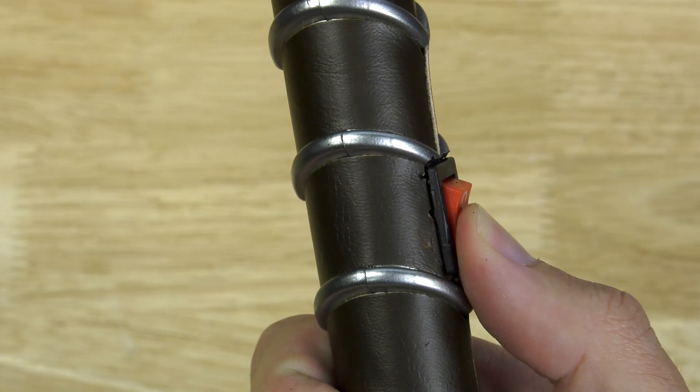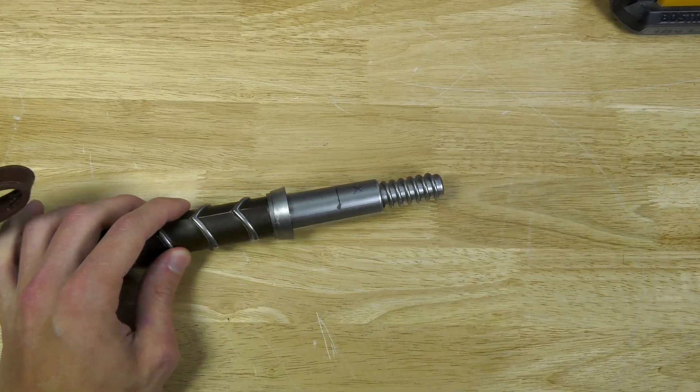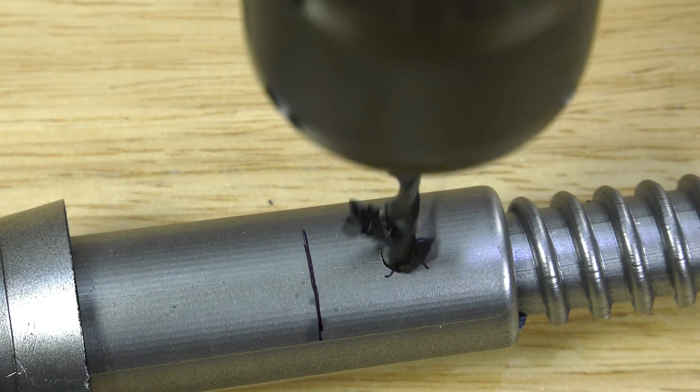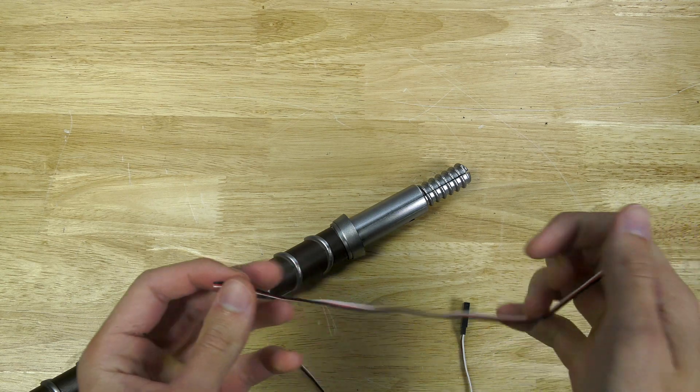And it finally fits after like an hour of sanding. And here we're going to drill the hole for the servo wire that's going to be connected once the hammer's handle is screwed in.